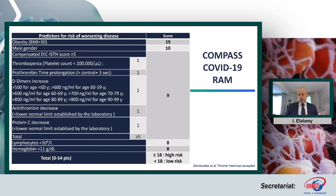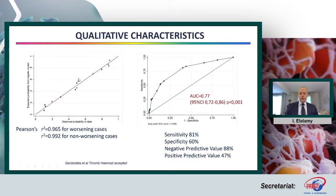Regarding the qualitative characteristics of our RAM, it is very well calibrated between worsening cases and non-worsening cases. The area under the curve is very comfortable. The sensitivity is 81% and the negative predictive value is around 90%. So this score has good accuracy to identify patients at risk for disease deterioration, and for those who may require earlier and stronger management.